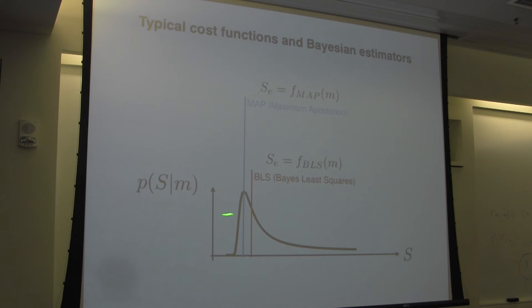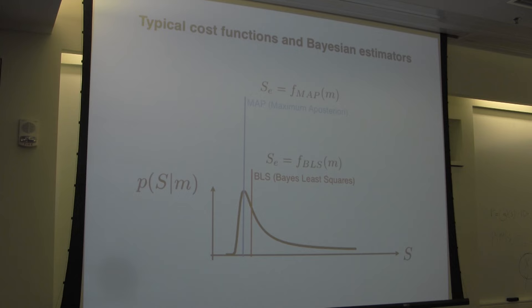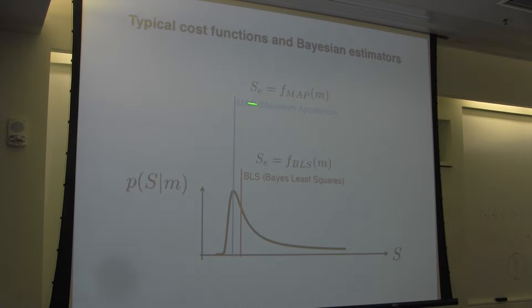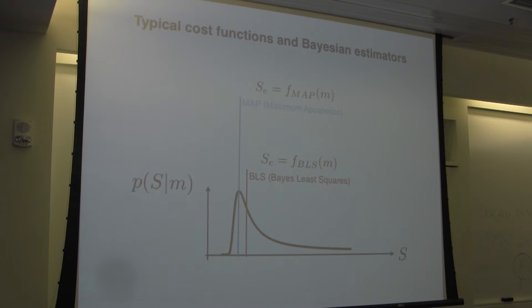So here now we have a new Bayesian estimate — a new f of M. I talked about maximum likelihood as one f of M; here is another f of M. One estimator takes the peak of the posterior — the MAP estimate — and another takes the mean of the posterior, corresponding to different cost functions.